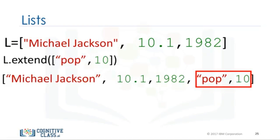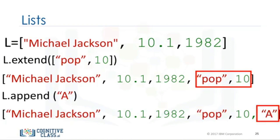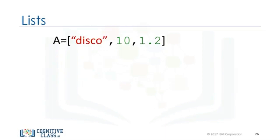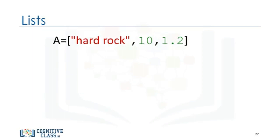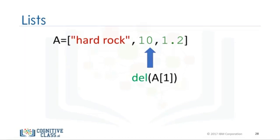Every time we apply a method, the list changes. If we apply extend, we add two new elements to the list. If we append the string A, we further change the list, adding the string A. As lists are mutable, we can change them. For example, we can change the first element as follows. The list now becomes hardrock 10 1.2. We can delete an element of a list using the del command. We simply indicate the list item we would like to remove as an argument. For example, if we would like to remove the first element, the result becomes 10 1.2. We can delete the second element, and this operation removes the second element of the list.